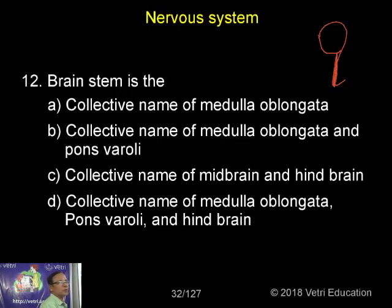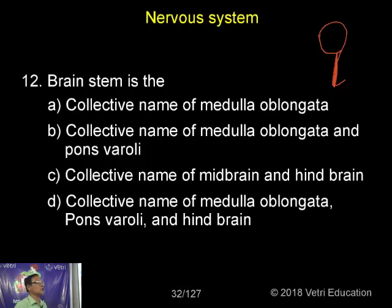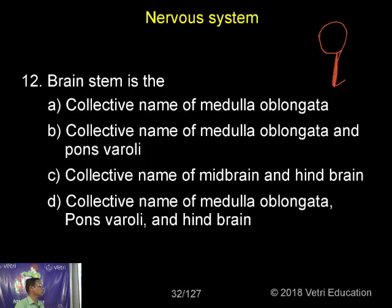The brainstem is formed of three components: one, the midbrain; the second one, the pons; the third one, the medulla oblongata. These three structures together are known as the brainstem.